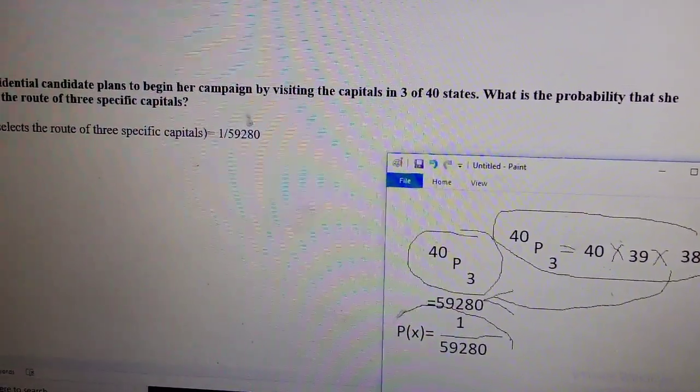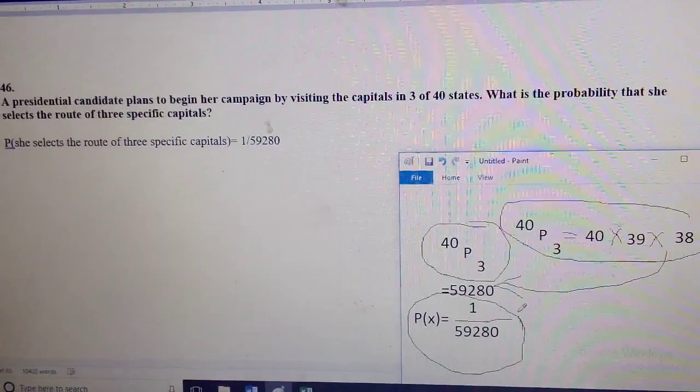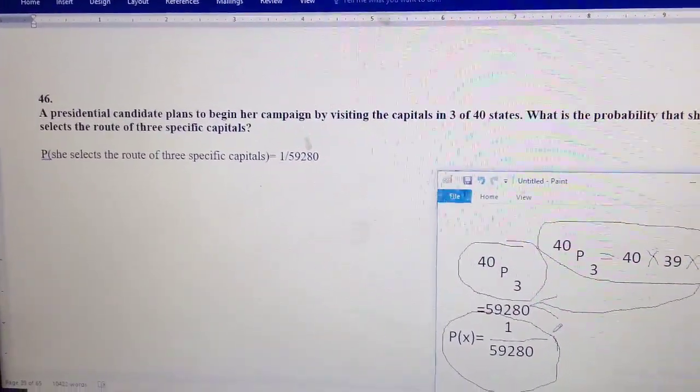So our desired probability is 59280. This is our desired probability. So we get the answer.